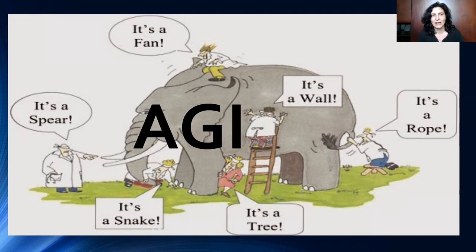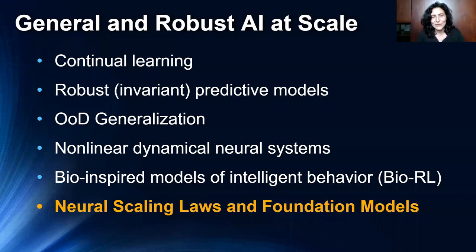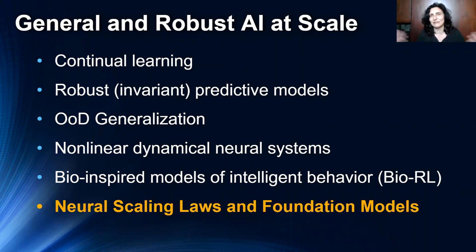People argue whether AGI needs to be something conscious, have the general ability of a human, or simply be a model capable — with the same set of weights in a deep network — of performing a wide variety of tasks. One definition from OpenAI is that we want an autonomous system that can do well on most economically valuable work, ideally outperforming humans.